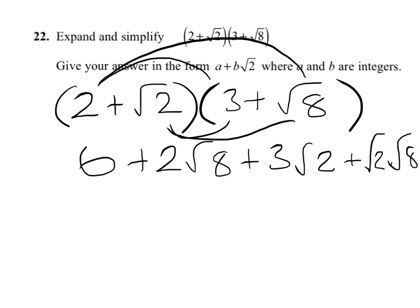So we'll tidy this up. We've got 6 plus 2. Now let's change our root 8. 4 goes into root 8, so that's going to be 2 root 2. I'll put that in brackets there, so the 8 gets changed to 2 root 2. Plus 3 root 2. And then we've got plus root 2 times 8.